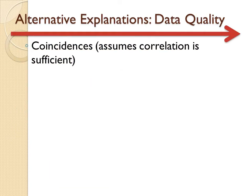First of all, you need to check for data quality. One thing that could just be happening is coincidences. Even the best data has what is called a probability factor — a p-factor of 0.01 — meaning that one out of a hundred times it could be a coincidence, a random result. This is why you need to test it more than once. Even the best and strongest correlation could possibly be from coincidences, so you need to test more than once.